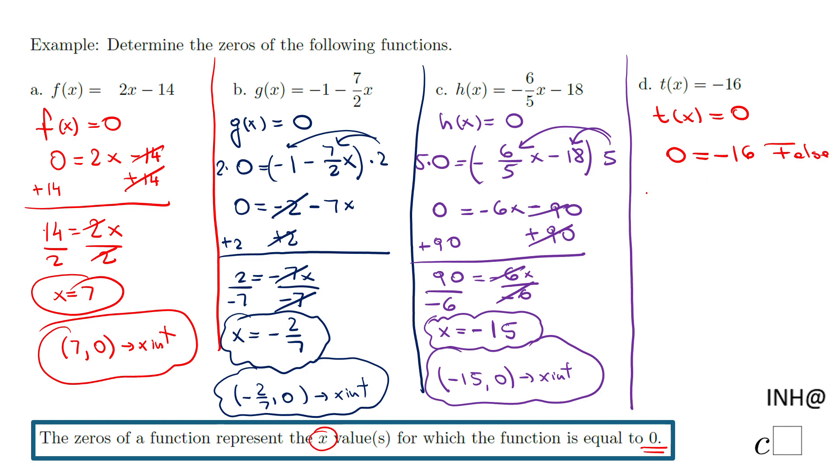So that means there is no x for which t of x equals zero. There is no value that makes the function equal to zero. Does not exist. That is another way to say it.